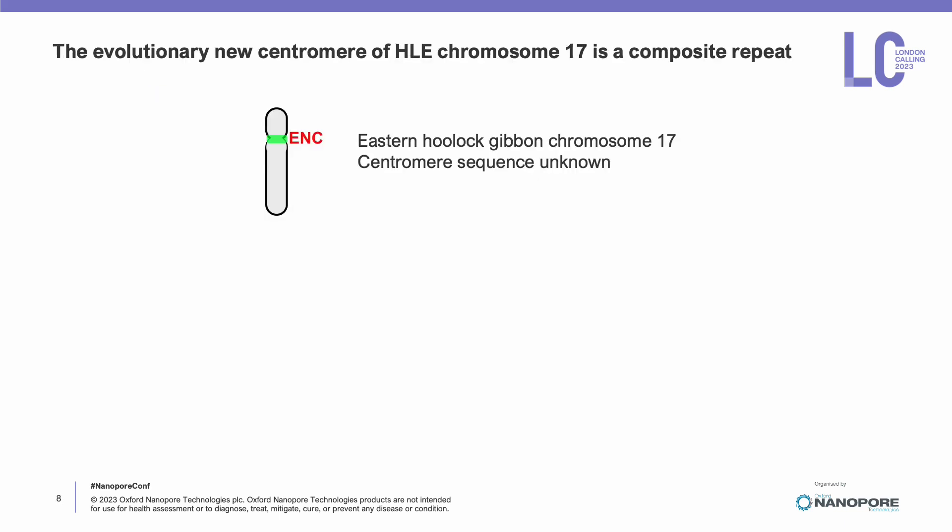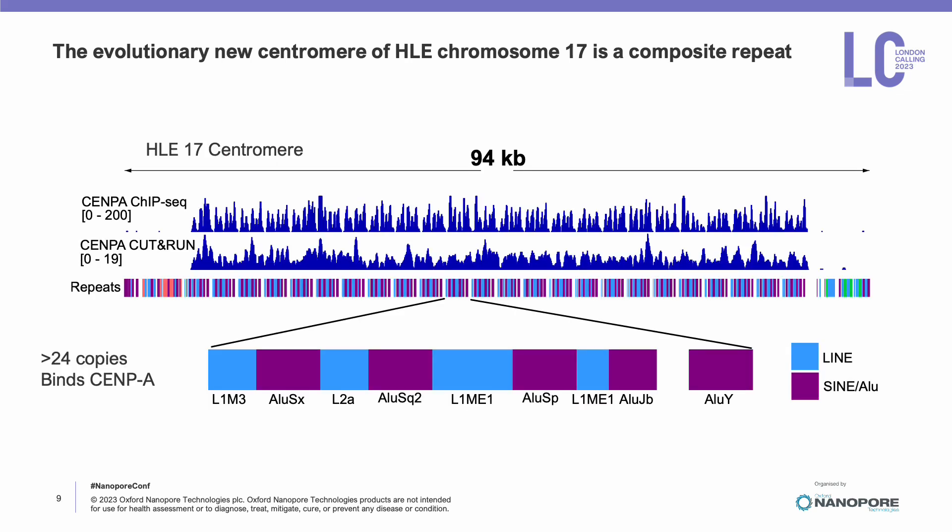To begin investigating these centromeres, we decided to start with the centromere of the eastern hoolock gibbon chromosome 17. Due to chromosome rearrangements, chromosome 17 formed an evolutionary new centromere, and the sequence of this centromere was previously unknown. Using CENP-A CUT&RUN, we identified an array of tandemly repeated transposable elements that associate with CENP-A.